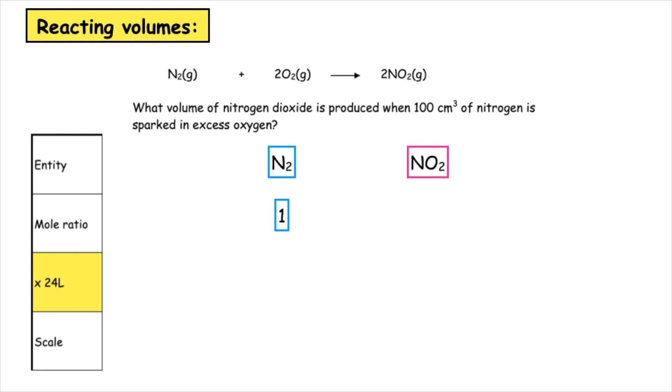We then do the mole ratio from the balanced equation. We've got one nitrogen and two nitrogen dioxides. We then want to times through by our constant unit. We have learned that one mole is equal to 24 litres of gas unless specified otherwise. So we're going to times both sides by 24 litres. One times 24 litres gives me 24 litres and two times 24 litres gives me 48 litres.